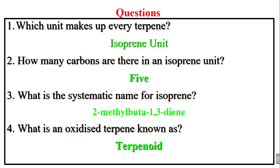The last question is: what is the name of the oxidized form of a terpene? Terpenoid — a terpene that has been oxidized with the presence of oxygen.